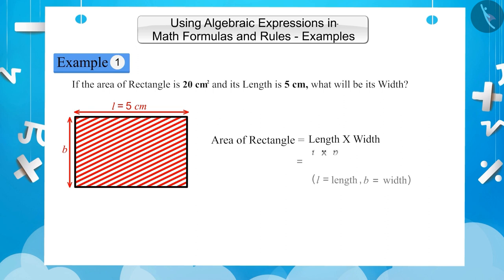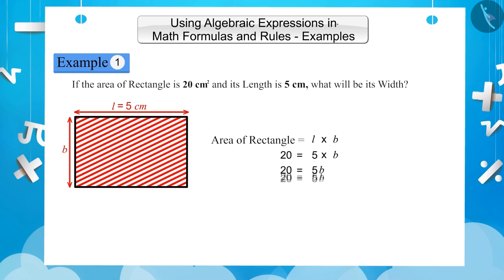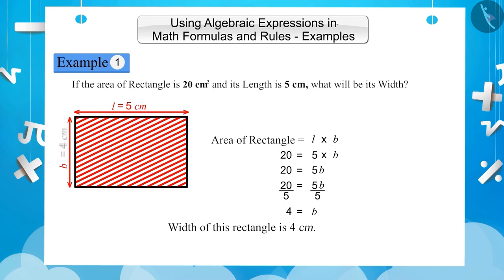The area of the rectangle is l multiplied by b, that is 20 equals 5 times b, which gives us 20 equals 5b. Now we divide both sides by 5: 20 divided by 5 equals 5b divided by 5, which gives us 4 equals b. Hence the width of this rectangle will be 4 centimeters.